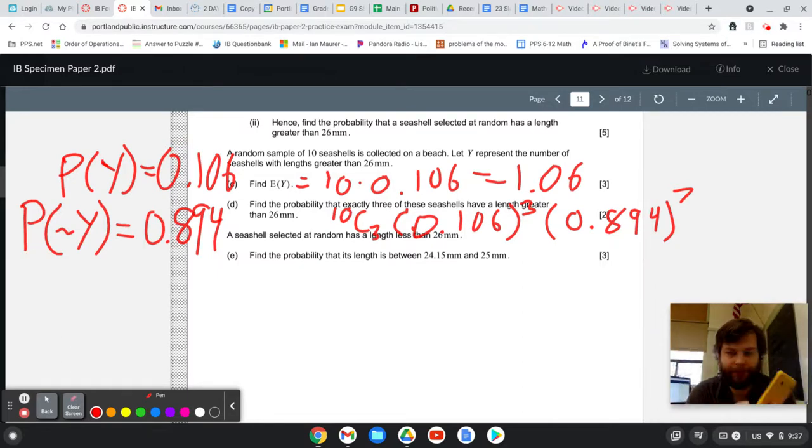So you can type that into your calculator. The choose is under math. Math, you go over to probability, option three, NCR. So we go 10, choose three. Then we do 0.106 to the third, 0.894 to the seventh. And we get a very small probability, 0.0652. I guess I should have probably done another space there. So that's the probability there.